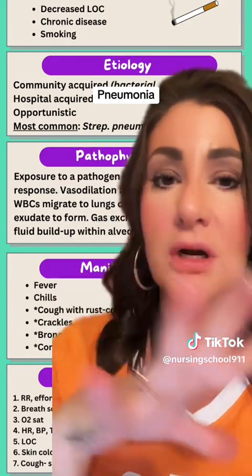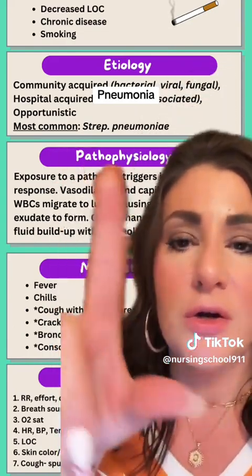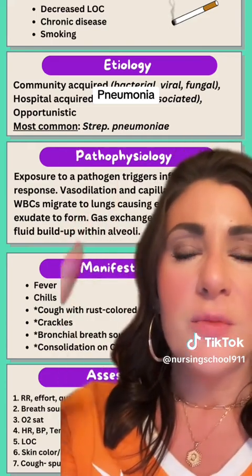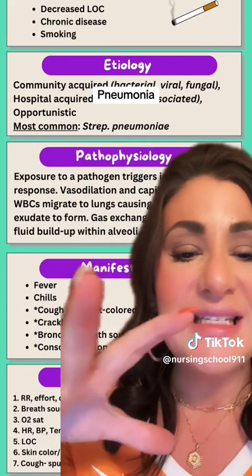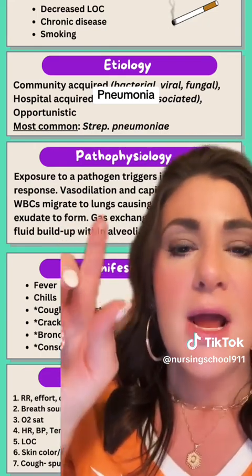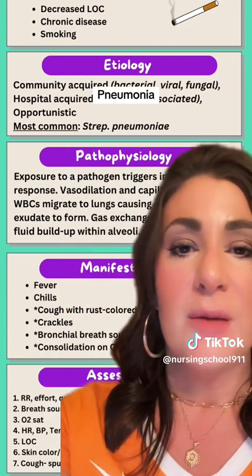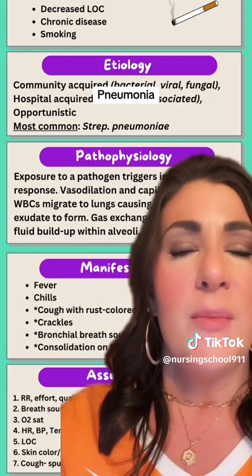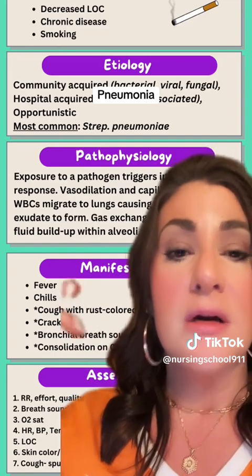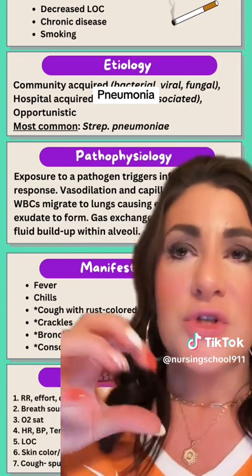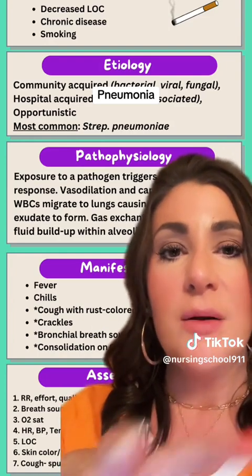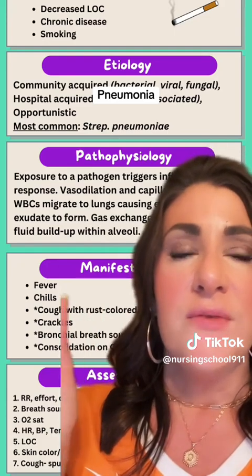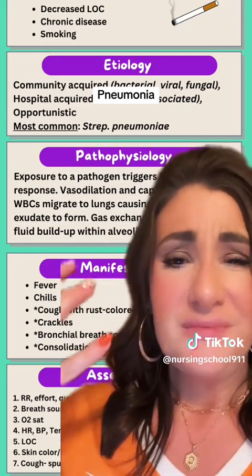So with the etiology, you can break it down lots of different ways. I've got it broken down here into community acquired, hospital acquired, and opportunistic. Community acquired pneumonia is going to be our least serious type of pneumonia or least critical, and this is where we're thinking of pathogens like bacteria or a virus. Hospital acquired — we're thinking about ventilator-associated pneumonia, like we talked about with intubation and mechanical ventilation. There are also different pathogens that patients can pick up, a nosocomial infection.